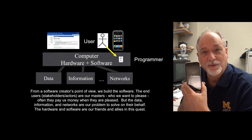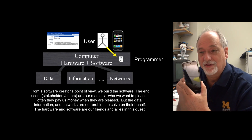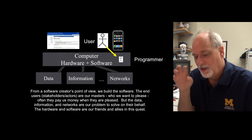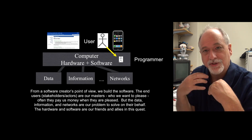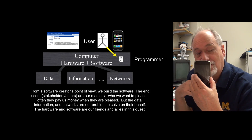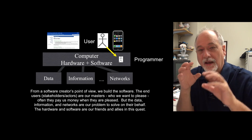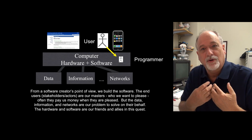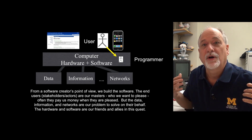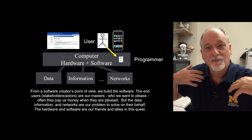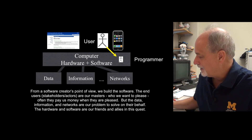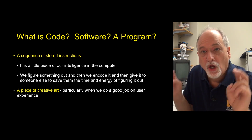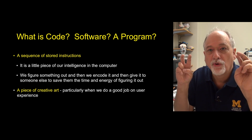There are things like the central processing unit, the memory of the system, the network connection of the system, the disk drive or permanent storage on the system. As a programmer, you are mediating between all those internal resources — which are not very smart but highly powerful — and what the user wants. We programmers serve the end user, but the computer serves us. Together, between us and all the computer's resources, we can serve the needs of the end user. And we do this by writing code, or programming.